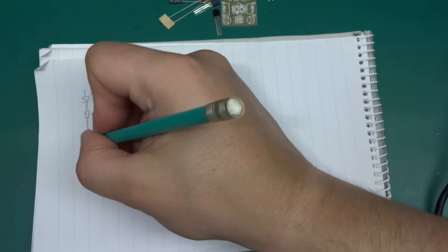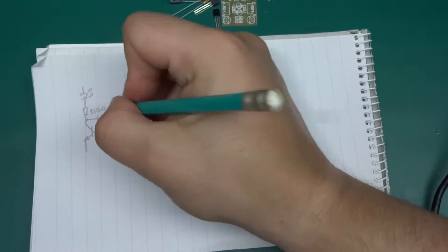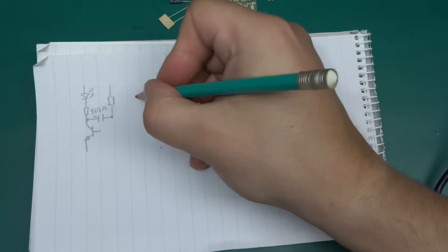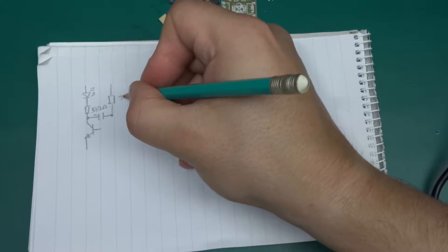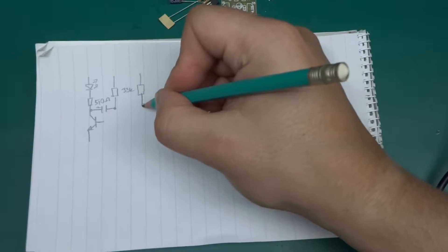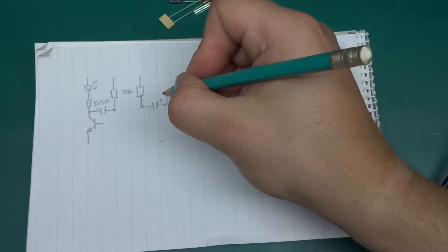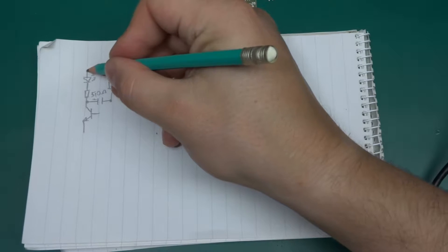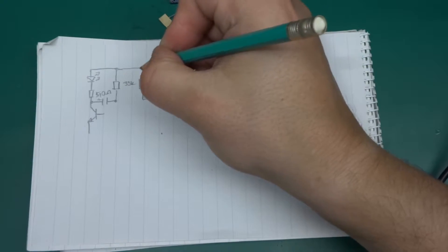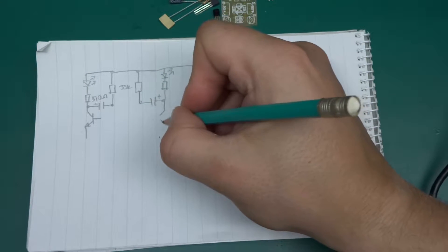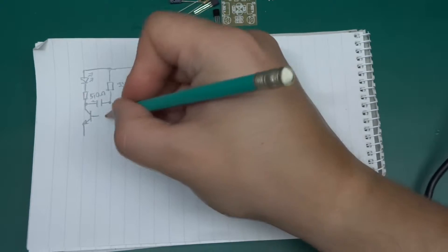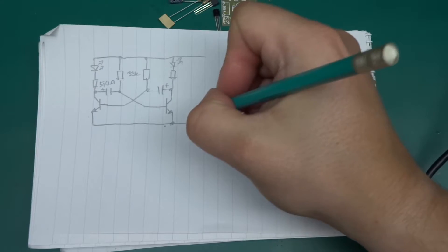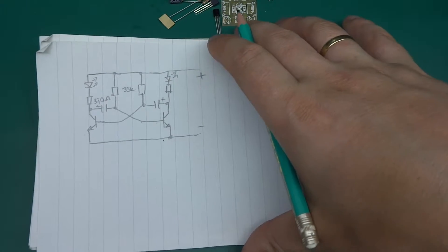What we have is an LED in series with a resistor, 510 ohms in this case, that goes to the collector of an NPN transistor. We've got a capacitor here, electrolytic, another resistor and another resistor, both of those are 33k, the capacitor, resistor, second LED, and the second transistor.